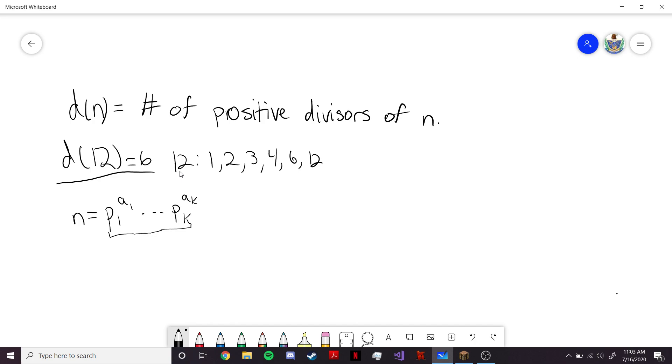Let's just write it like this: P1 to the A1 times dot dot dot Pk to the Ak. So, we have k distinct primes, P1 through Pk, and their respective exponents are A1 through Ak. Now, how do we figure out how many divisors this number has? Well, it would help to break down this example that we did here by looking at it in terms of the prime factorization.